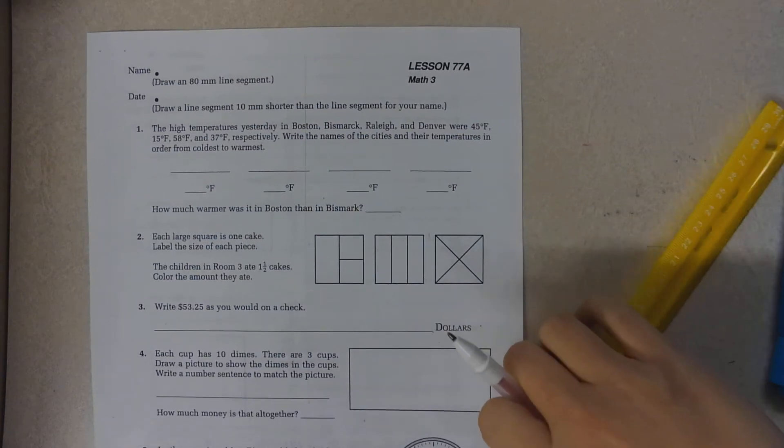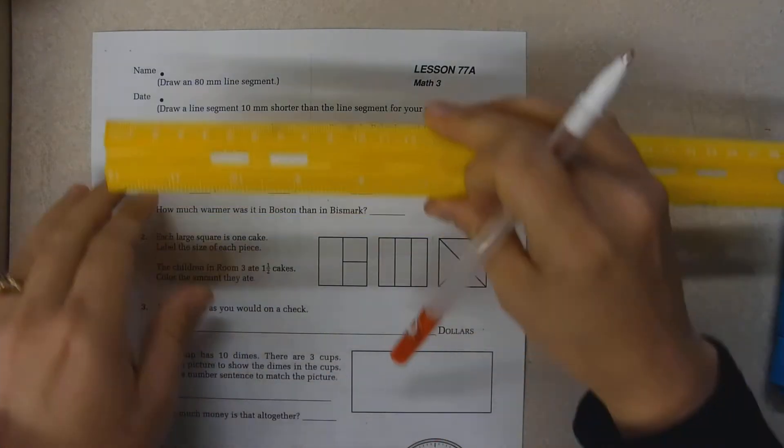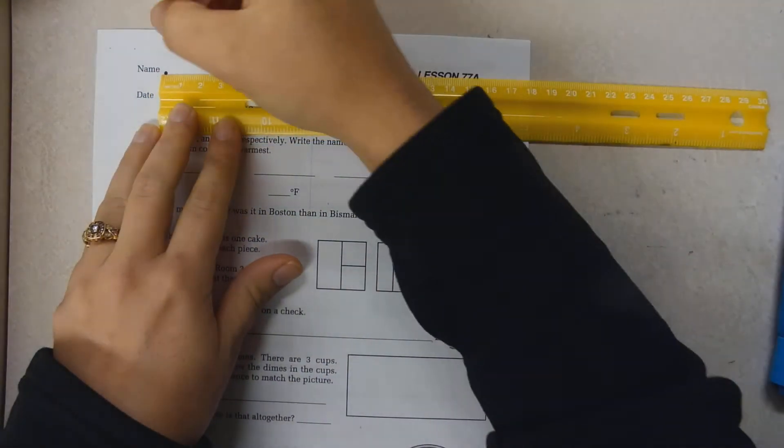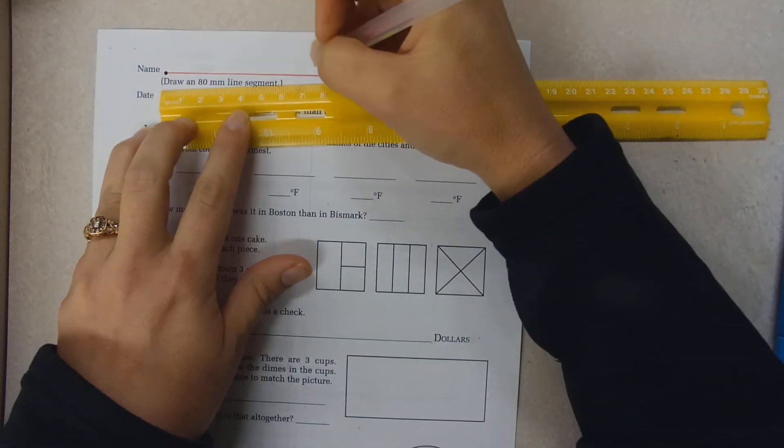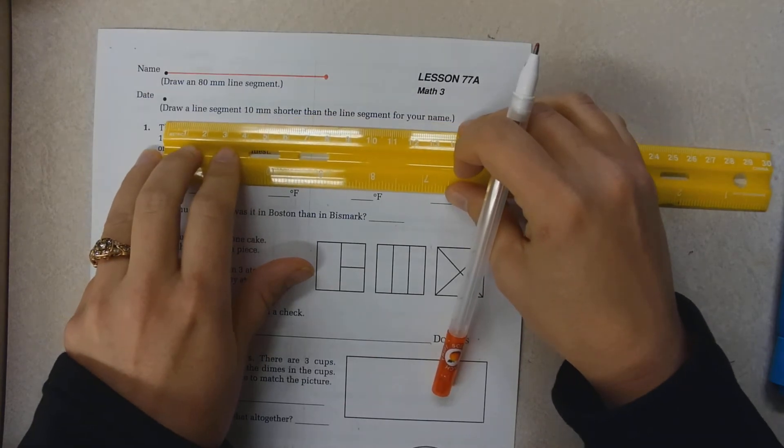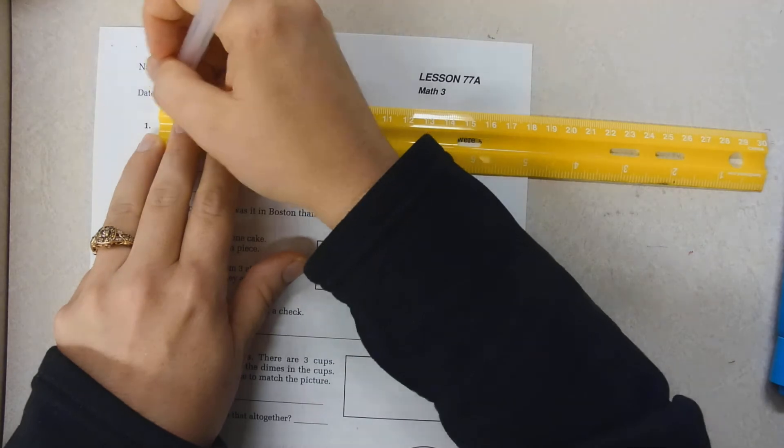Hey girls, today we are working on lesson 77 in our Saxon math and we're going to draw an 80 millimeter line segment or 8 tens on my centimeter line and draw a segment 10 millimeter shorter, so that would be 7 tens.